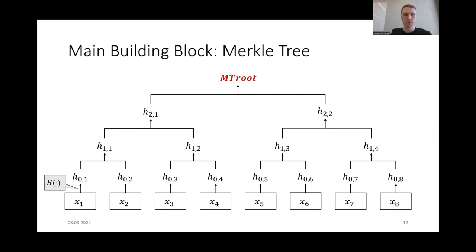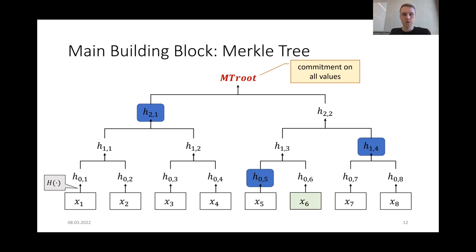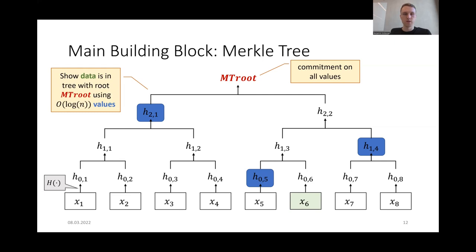Before heading to our construction, let me introduce an important building block used throughout: the Merkle tree. A Merkle tree allows committing to a set of data chunks x1 to x8, where the Merkle tree root constitutes a commitment on all of these values. It is also efficiently possible to prove that a specific data chunk is indeed part of the Merkle tree. To do this, we create a Merkle proof consisting of all the hash values that are siblings on the path from the data chunk to the Merkle tree root. This allows creating a Merkle proof with only logarithmically many values, where n is the number of data chunks.